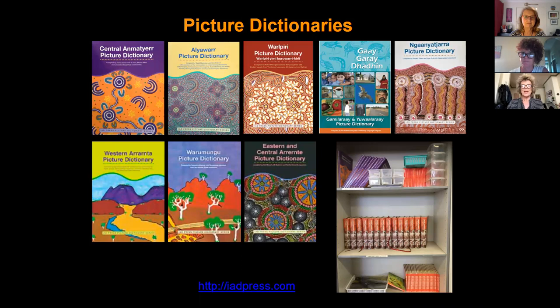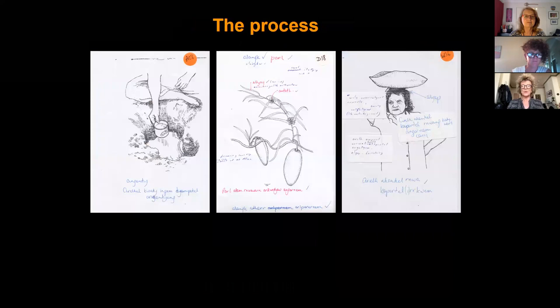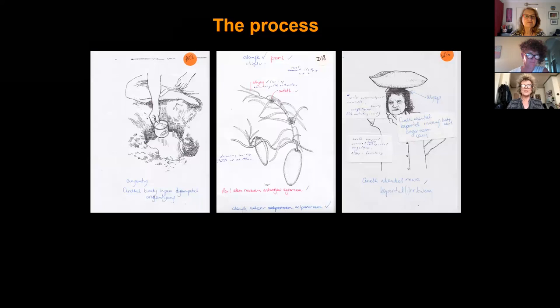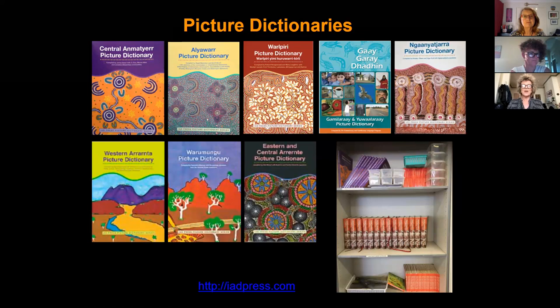Our idea was to develop a template that could be used repeatedly by different groups, thus saving time and money by sharing resources. This was particularly feasible with language groups that share similar ecosystems and cultural practices — so they had just the same plants and animals, similar geography and so on. The picture dictionaries add to a suite of language resources that include learners' guides, the big encyclopedic dictionaries, and many other things that have been published in the last nearly 40 years. IAD is the main publisher, and there are now many in the series covering languages in the Arandic group, Warlpiri, and some Western Desert languages as well.